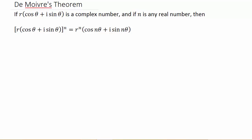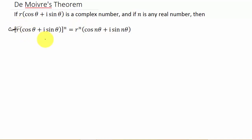In this video, let's look at De Moivre's Theorem. It says if we have a complex number in trigonometric form — r times cosine theta plus i sine theta — and n is a real number, then that expression raised to the nth power is equal to r to the nth times cosine of n times theta plus i sine of n times theta.